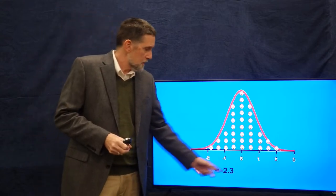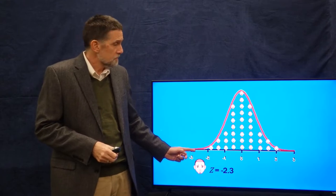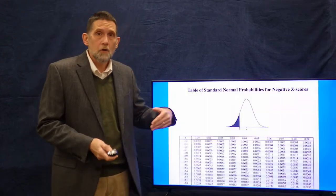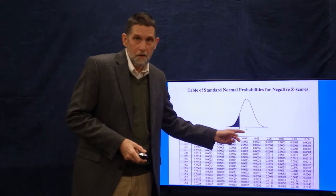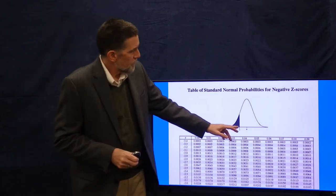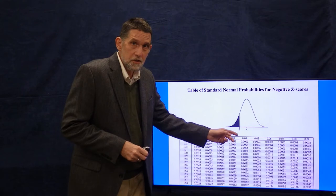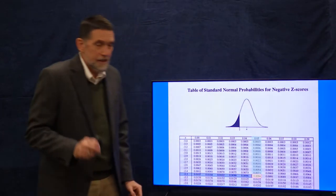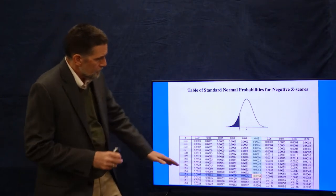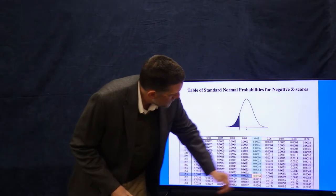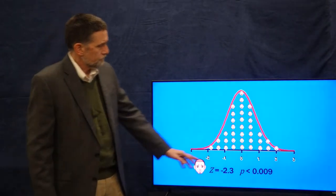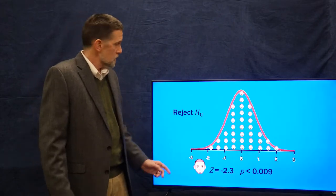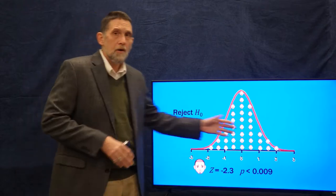Here we have a person with a z-score of -2.3. They're way down on this population — are they part of the happy me population? They look kind of sad, so maybe they're not. Going to the z-score table for the lower part, at z = -2.3 with a critical value of 0.05, we see a p-value of 0.0094. That probability is less than 0.009, meaning they're way out in the tail, so we reject the null hypothesis — they are not part of this population.